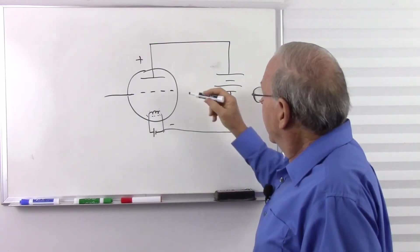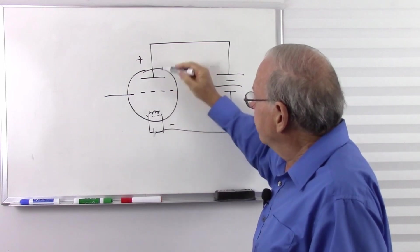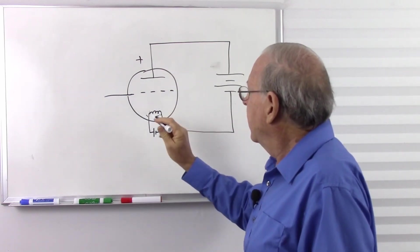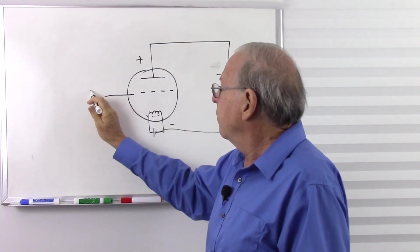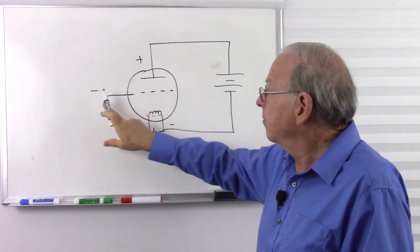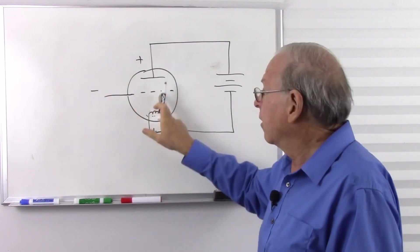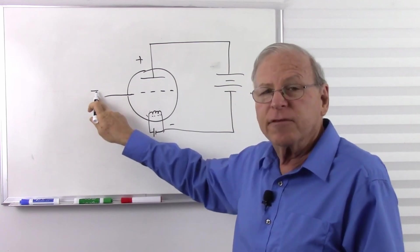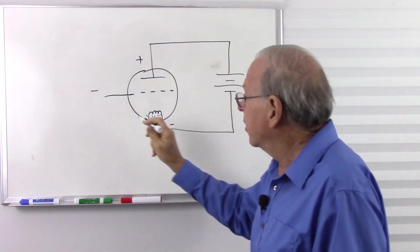So if this is unenergized, those electrons are going to flow right through as long as this battery's in place here. But if we put a negative voltage here, it's going to block those electrons. So we can use a negative voltage to block the flow, either turn it on or off. Or if we put just the right amount of negative voltage here, we can moderate the flow of electrons.